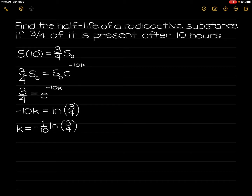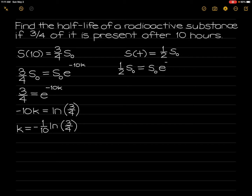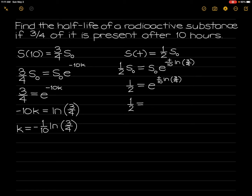We are to find s of t wherein we have one-half the amount of the initial substance. So, one-half times s-naught is equal to s-naught times e raised to negative k times t, which gives us t over 10 times the ln of 3 over 4. This reduces to: one-half is equal to 3 over 4 raised to t over 10.